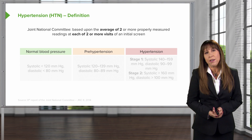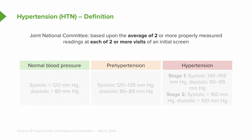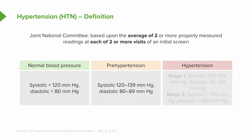When we think about the definition of hypertension, it really depends on who's defining it. By the Joint National Committee, whose guidelines were produced in 2014, it's based upon the average of two or more properly measured readings at each of two or more visits of an initial screen. Normal blood pressure is considered a systolic of less than 120 mmHg and a diastolic of less than 80. Prehypertension is considered a systolic between 120 and 139, and a diastolic between 80 and 89 millimeters of mercury.